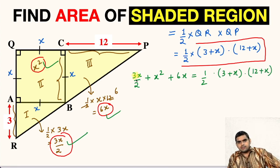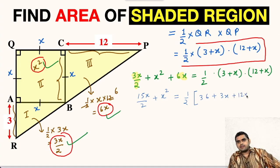First let us combine these two terms. This will give us 15X by 2 plus X square will remain as it is equals half, and we will multiply this. This will be 36 plus 3X plus 12X plus X square.